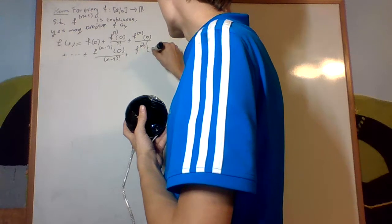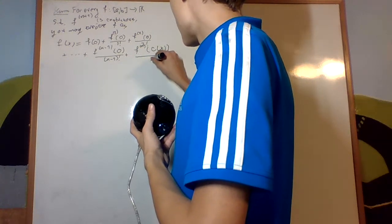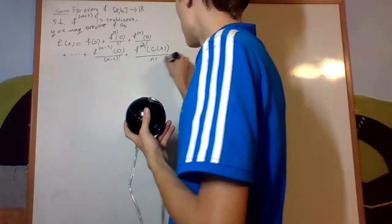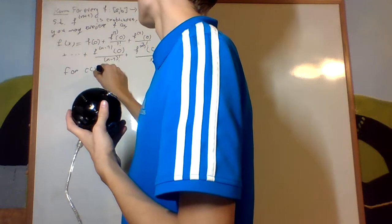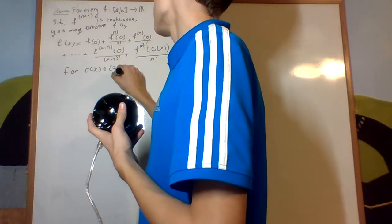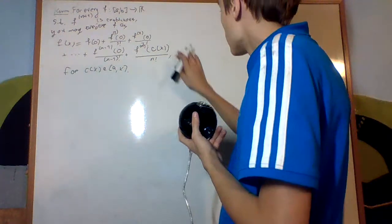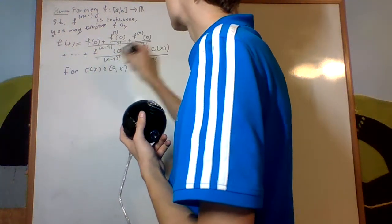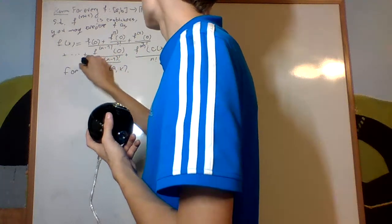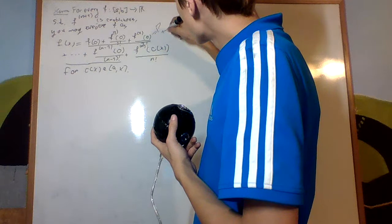f to the nth factorial of some function c of x divided by n factorial for c of x between a and x. And I'll call this polynomial, this one, the one including that plus c of x term, I'll call that p n minus 1 of x.